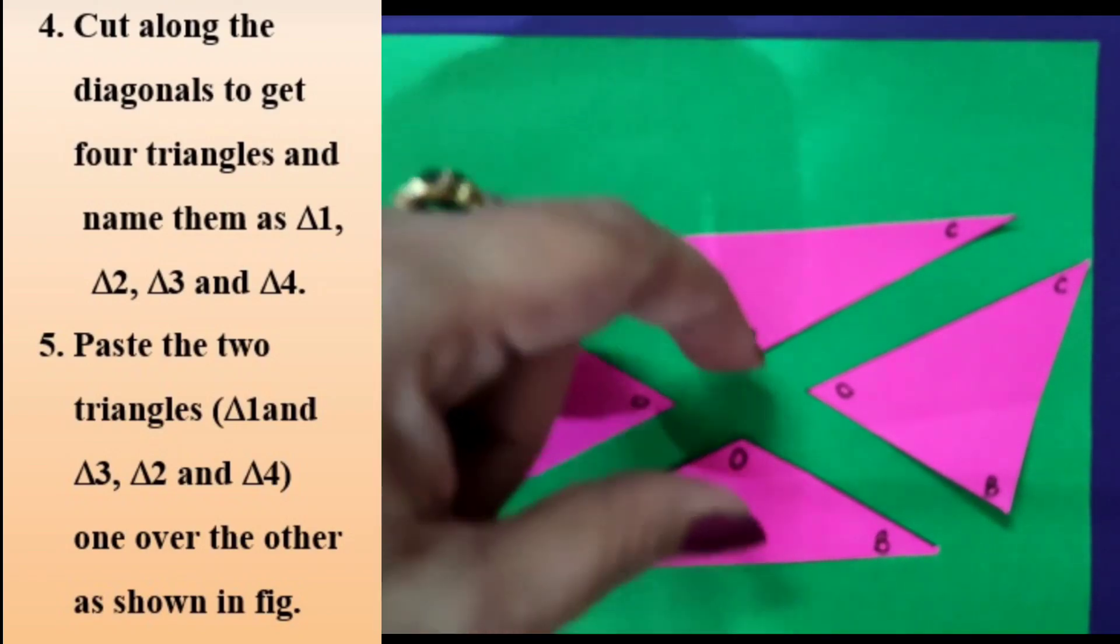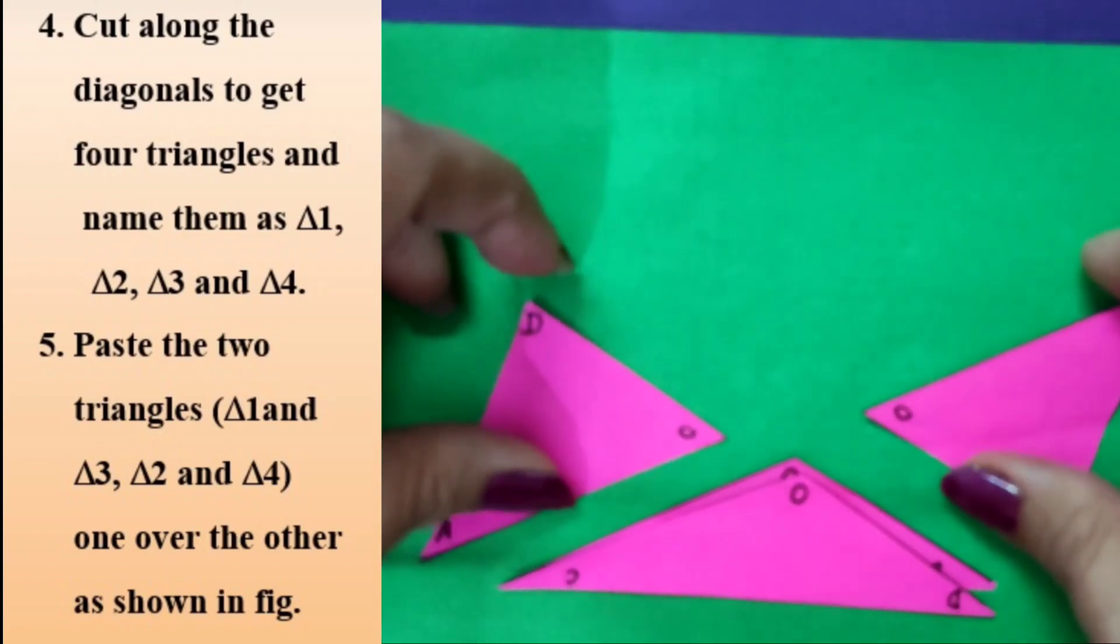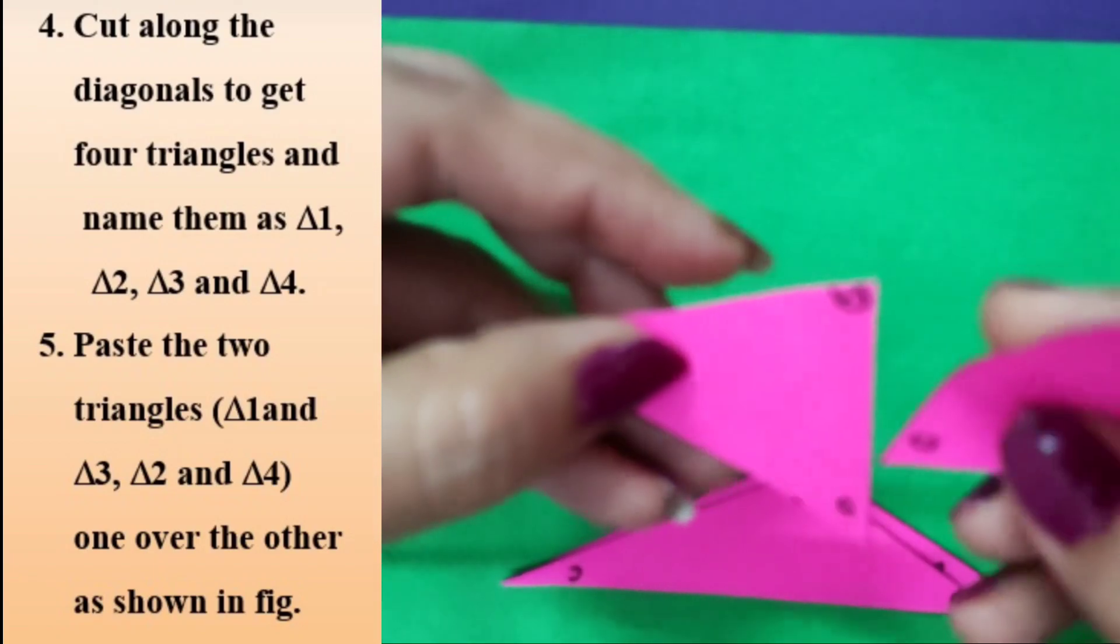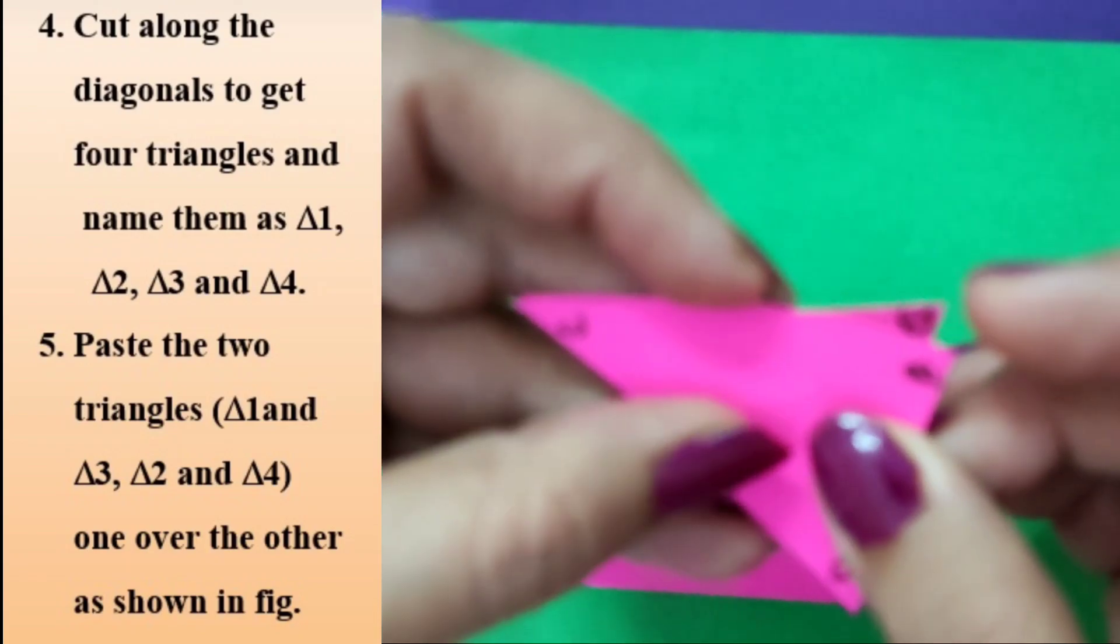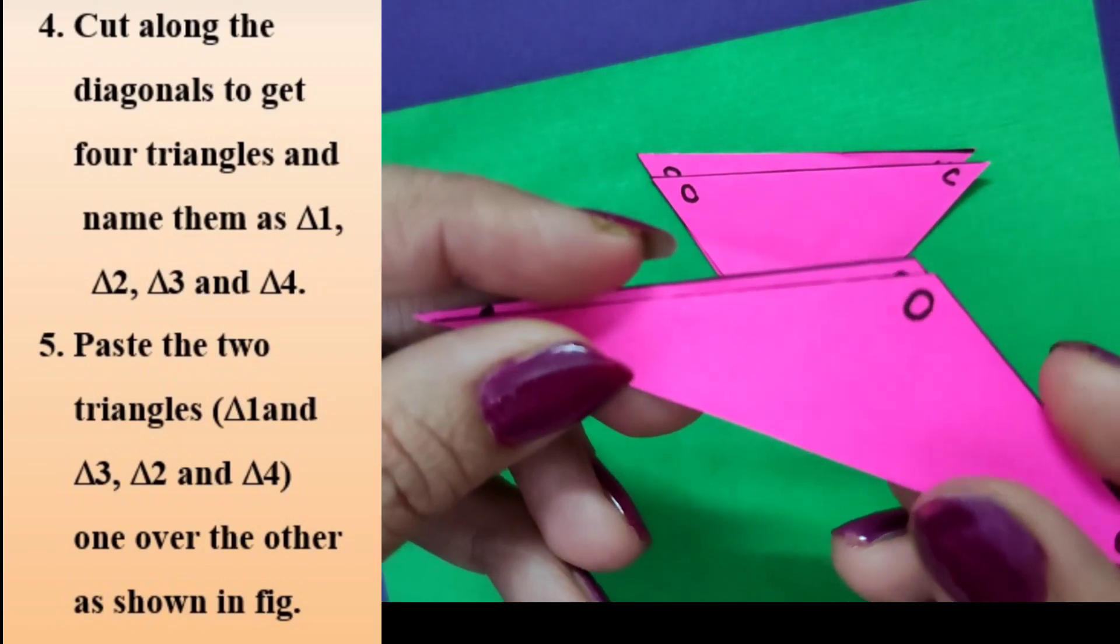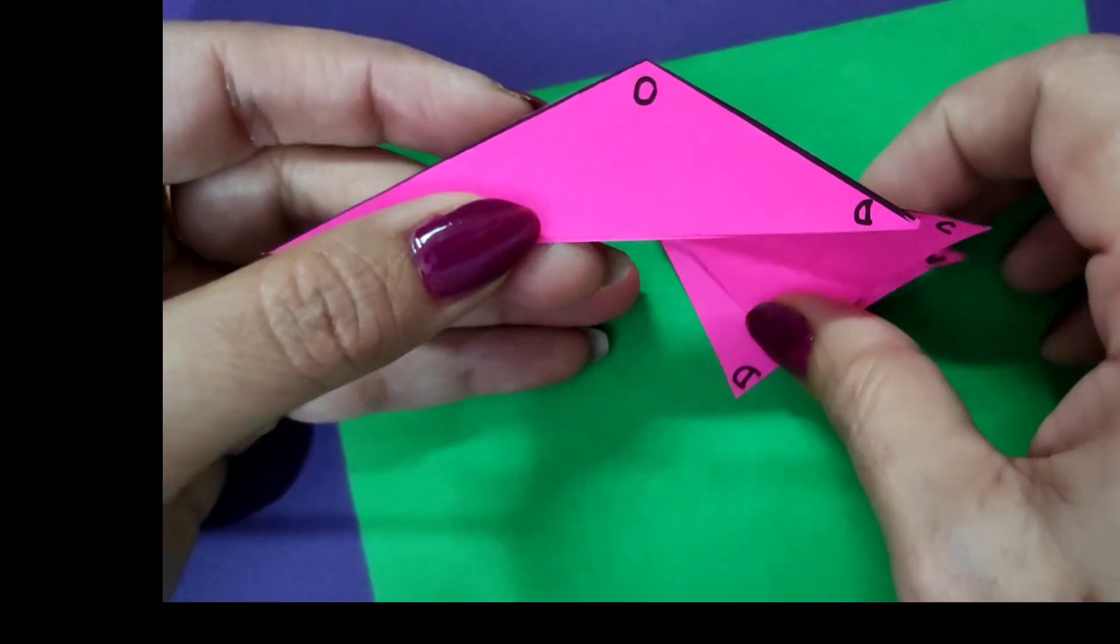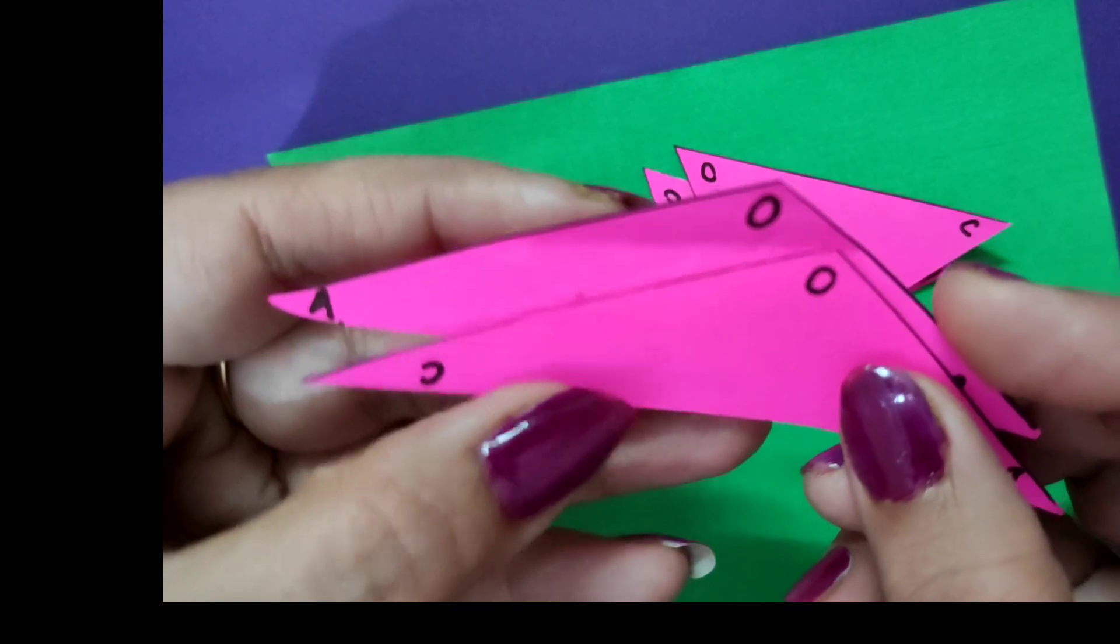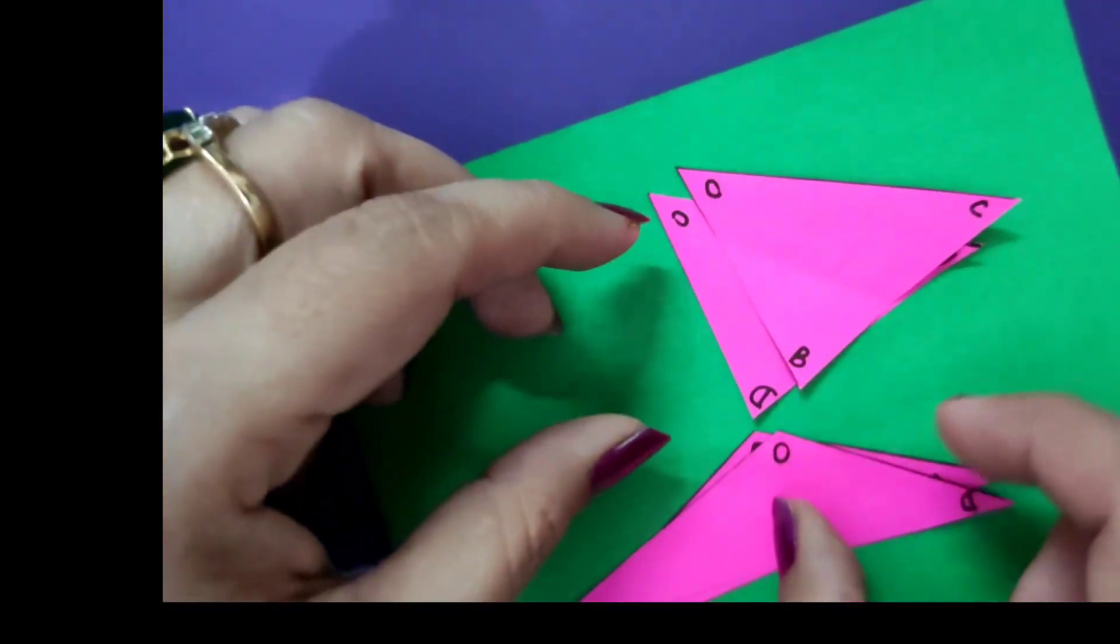I paste the opposite triangles. Triangle 1 and triangle 3 I paste on top of each other, and I paste these two triangles also on top of each other, such that point O is coinciding every time. You can see that the triangles are covering each other completely. That means they are congruent to each other. I can say that triangle DOC is congruent to triangle BOA.